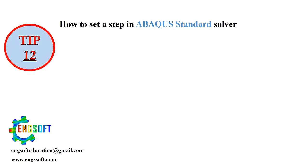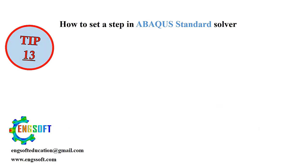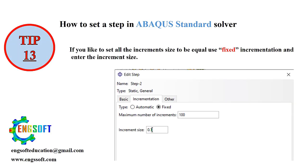Tip 12 — Use the job monitor: Check the job monitor during your simulation. It provides valuable insights that can help you adjust your settings for better performance. We'll cover how to use this feature in detail in future videos. Tip 13 — Fixed incrementation: If you need all increments to be of equal size, choose Fixed Incrementation and manually set the size.